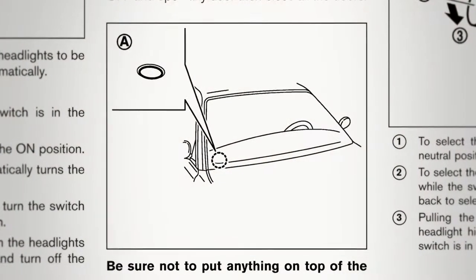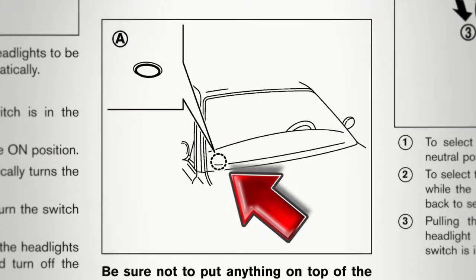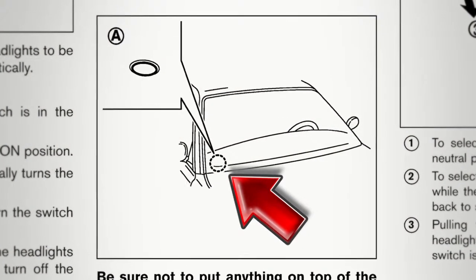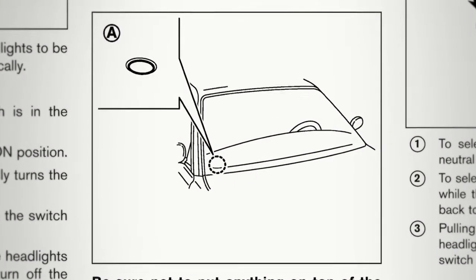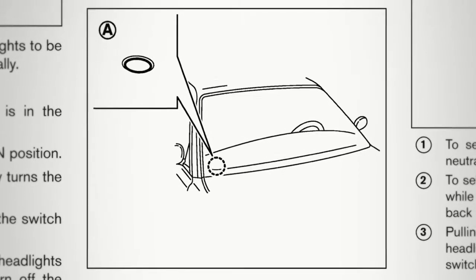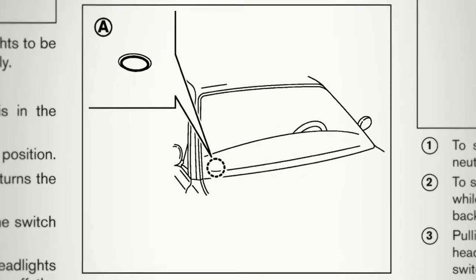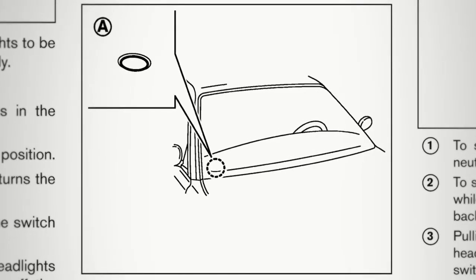There is a light sensor that controls the auto light system on the top of the instrument panel. Keep that area clear of papers and other material.